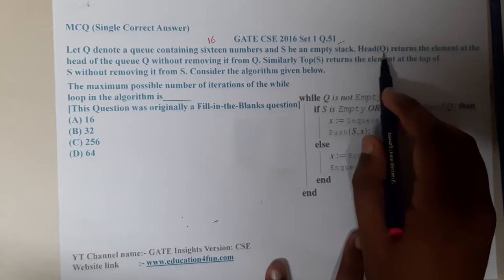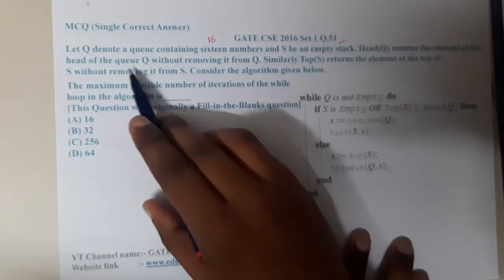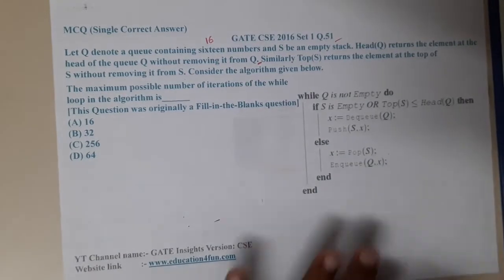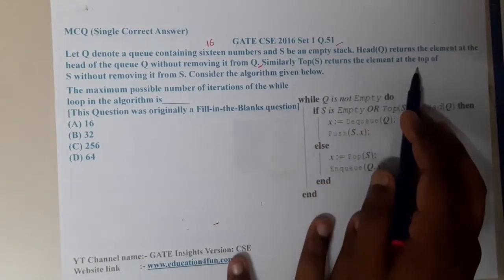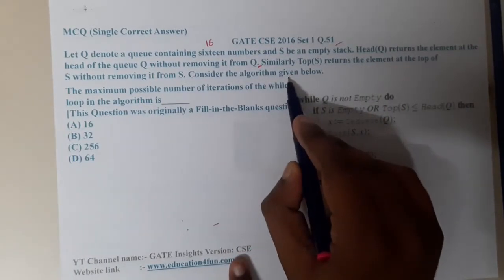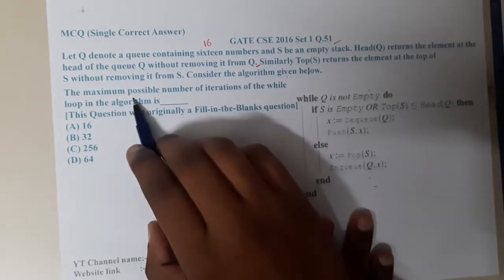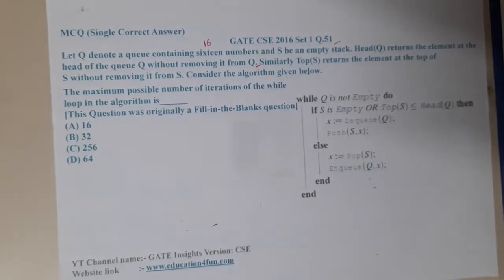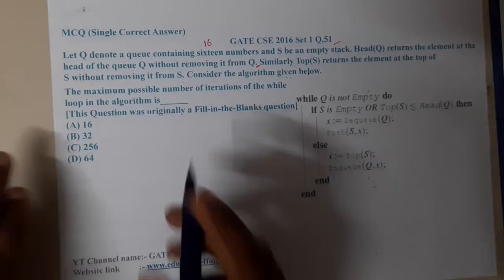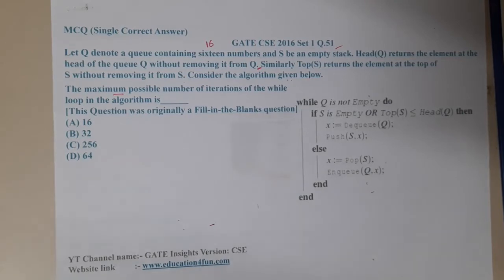Here, head(Q) returns the element at the head of the queue without removing it. Similarly, top(S) returns the element of the stack without removing it. The algorithm given asks: what is the maximum number of iterations of the while loop?